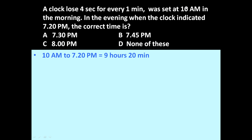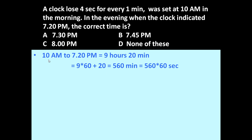To answer this question, first let us determine the elapsed time. It was set at 10 am and we want to know the time at 7:20 pm. So 10 am to 7:20 pm equals 9 hours and 20 minutes, which equals 9 × 60 + 20 = 560 minutes, which equals 560 × 60 seconds.